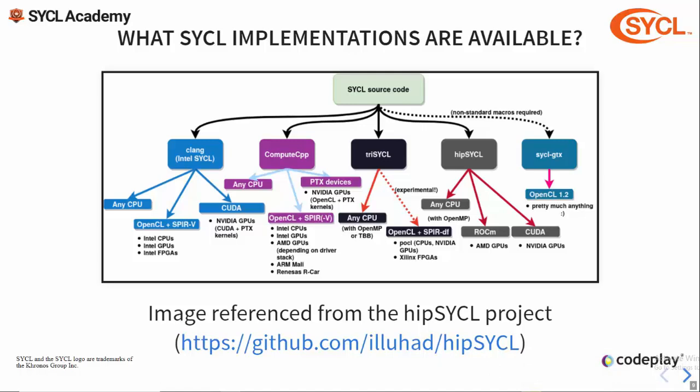Next we have ComputeCPP, a commercial implementation developed by Codeplay and optimized for embedded, mobile and automotive architectures. ComputeCPP supports Intel CPUs and GPUs, ARM Mali GPUs, the Renesas R-CAR platforms and experimental support for NVIDIA GPUs. Next up we have Tricycle, which is an open source project led by Ronan Keryell at Xilinx. Tricycle supports any CPU through OpenMP and TBB and also has experimental support for Xilinx FPGAs. Next we have HIP SYCL, another open source project led by Aksel Alpay at Heidelberg University. HIP SYCL runs on top of ROCm and CUDA backends to provide support for AMD and NVIDIA GPUs as well as support for any CPU via OpenMP.